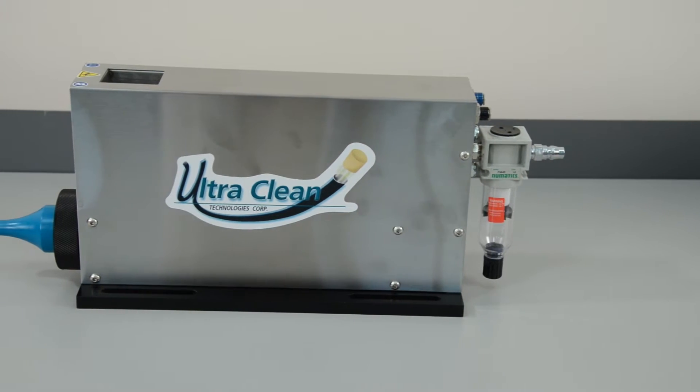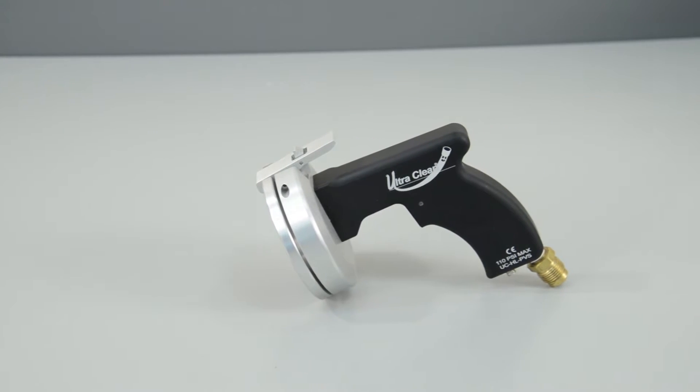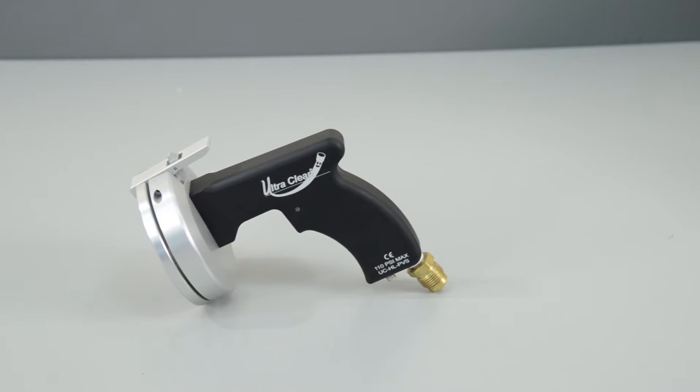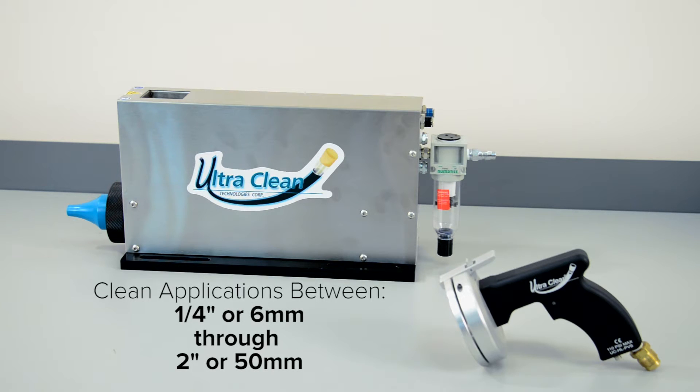The UCBM 1.25 Bench Mount Launcher and the UCHL PVS Handheld Launcher need to be purchased separately. These components allow for cleaning all applications between quarter inch or 6 mm through 2 inches or 50 mm.